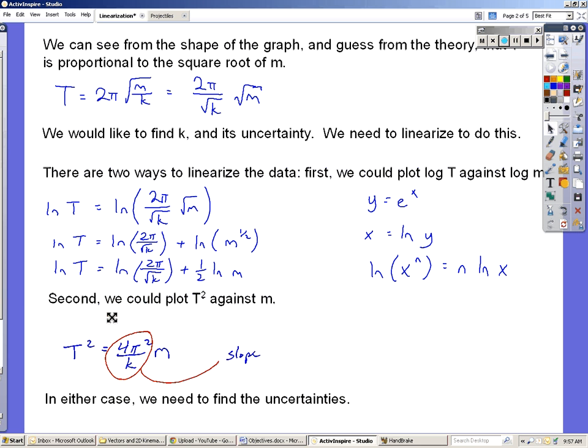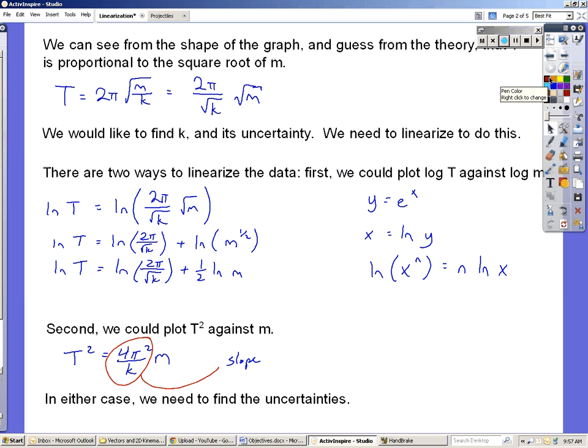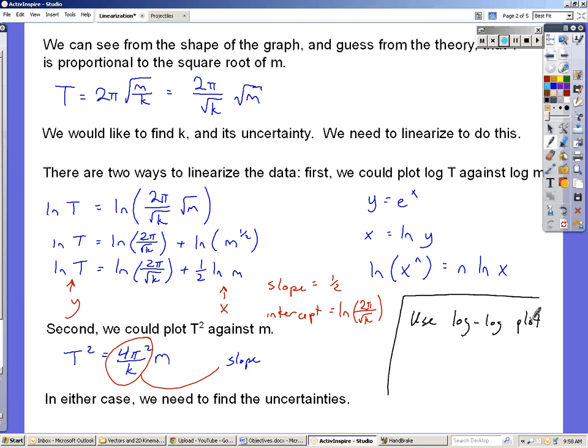So ln T equals the natural log of all this crap plus one-half natural log of m. And we can also point out that when it says natural log of T here, that is our new y. And natural log of m is our new x, which means that our slope in this case we expect to be one-half, and the intercept to be equal to the natural log of (2π/√k). And the log-log plot is a tremendously powerful tool because you can use it any time you have a function y equals some constant a times x raised to the power n. Any power law function like that, you can use the log-log plot for. And because these come up all the time in physics, that means we like log-log plots.